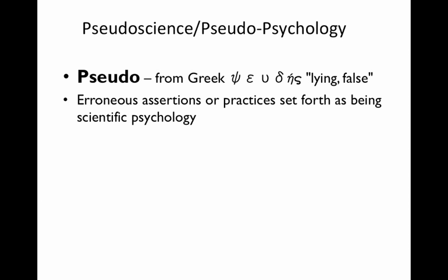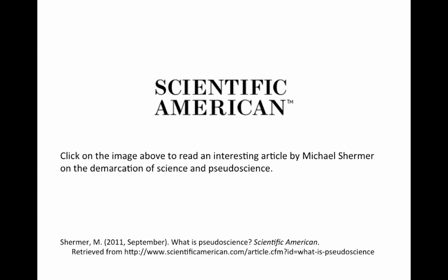So let's talk about pseudoscience and pseudopsychology. We've appended pseudo onto the front end of science or psychology, and pseudo comes from the Greek word meaning lying or false. It's about erroneous assertions or practices being set forth as actual science. When we say something is pseudoscience or pseudopsychology, we're saying it's not really scientific — it's a false belief system being set forth as a true belief system. Now, this may sound cut and dry, but nothing is ever black and white. I want you to click on the Scientific American image in this presentation and go to an article by Michael Shermer that talks about that demarcation line and how it can be not quite as easy as you might think.